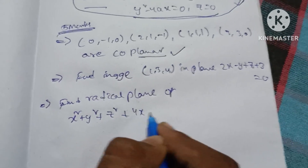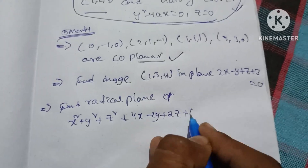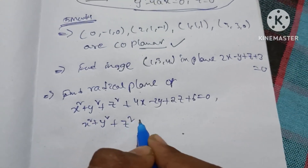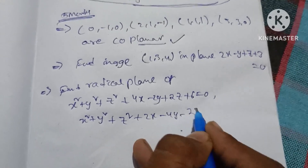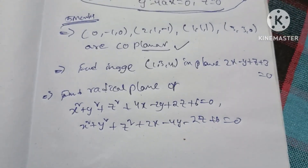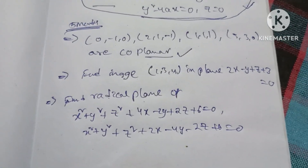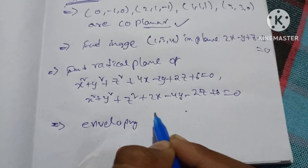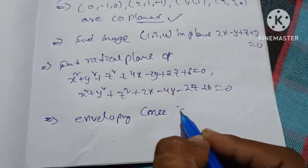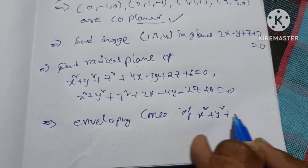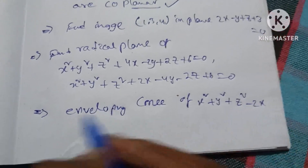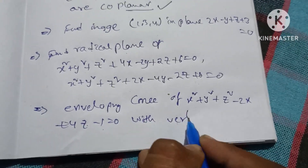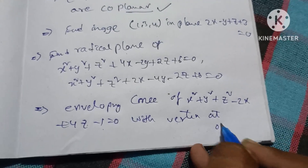This is a very simple model. The simple question should take about five minutes. We have an equation for the radical plane. Here is the question — find the enveloping cone of the equation. If you have any equation with plus or minus, it will be very easy in examinations. For these 4 questions, you will be able to score well in examinations.